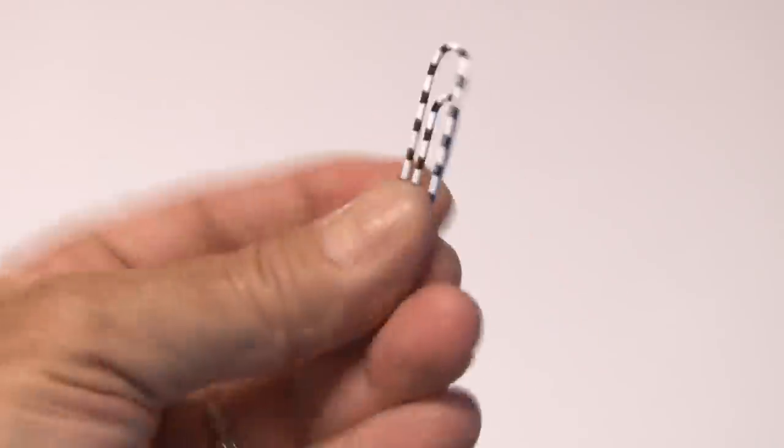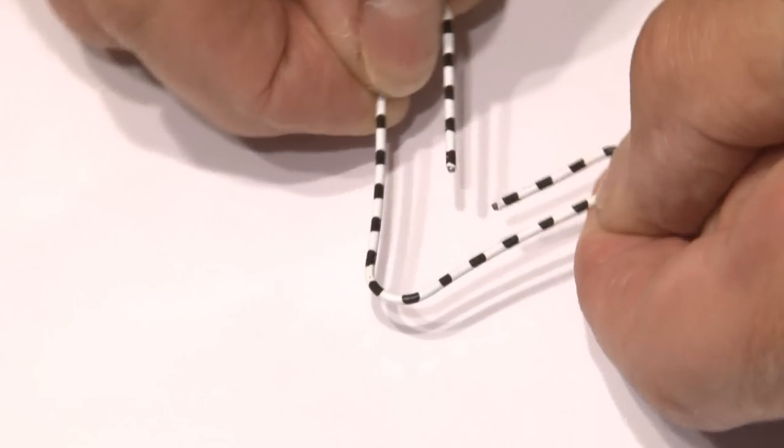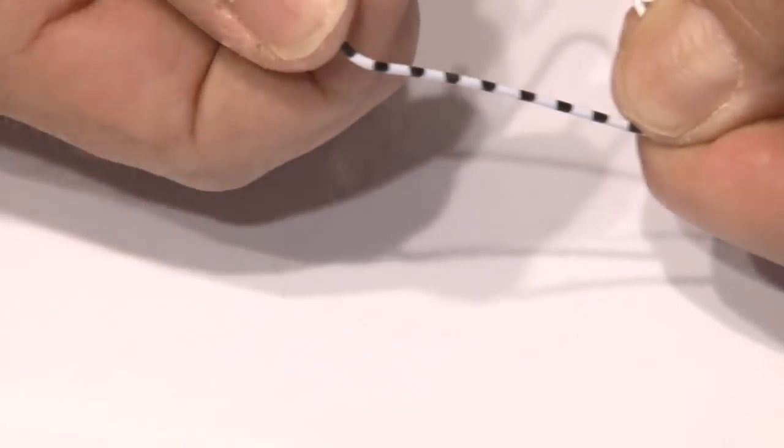Up next, the bouncy clip. For this one, we're going to use a large size paperclip. We'll bend out both ends to form a V. Then we'll bend those two ends out, so they come together, forming a triangle.